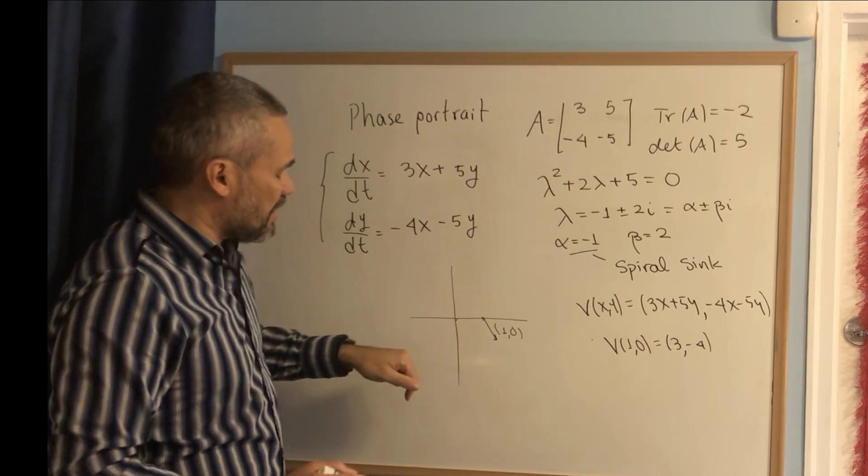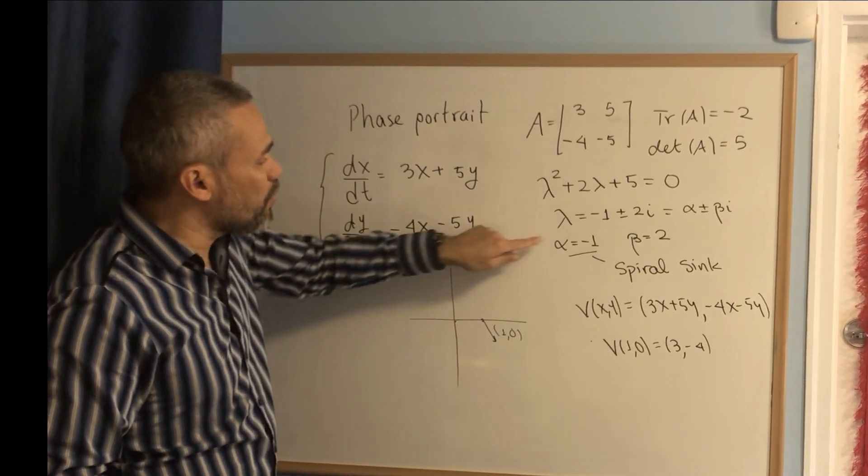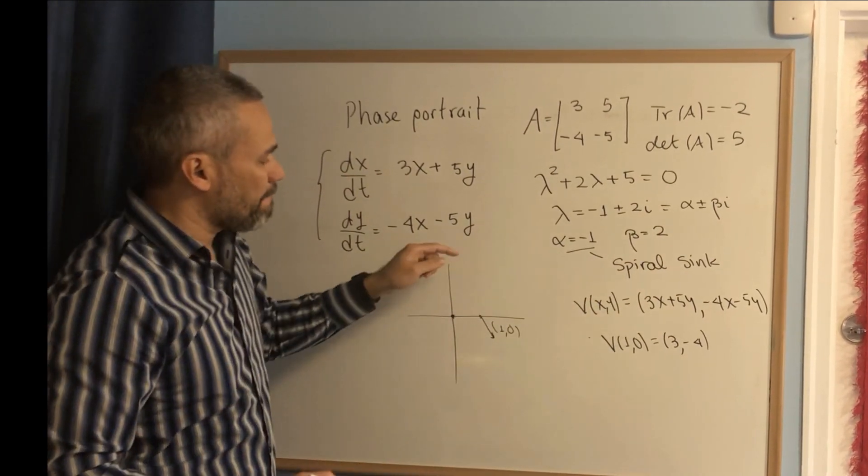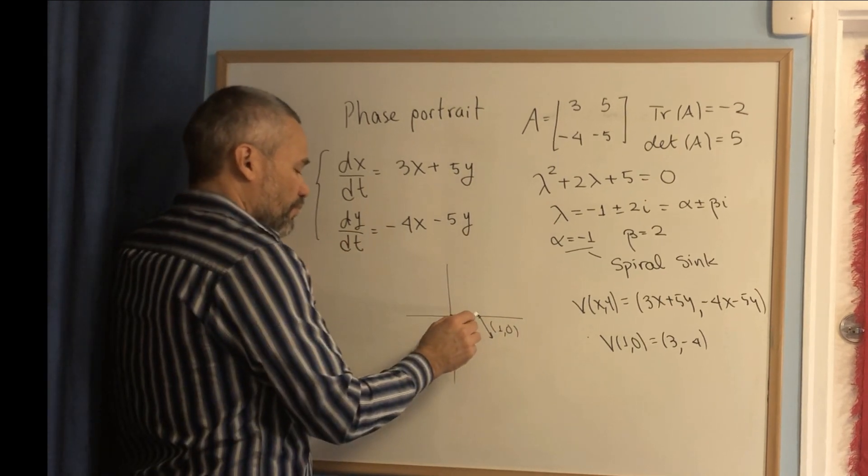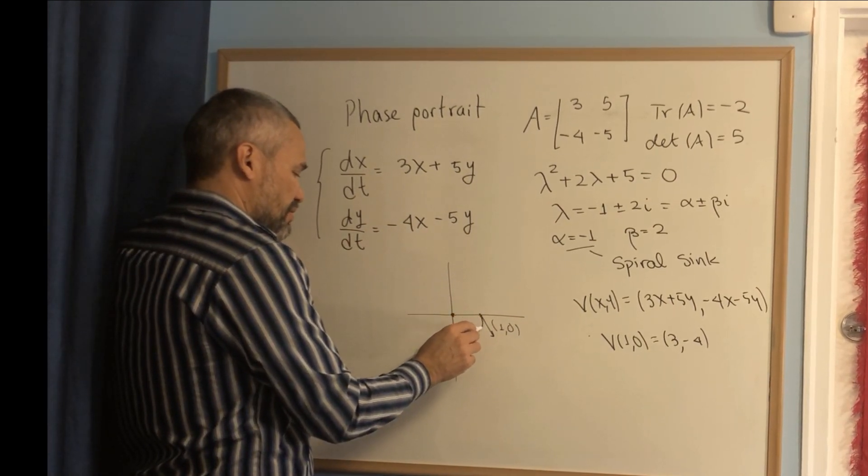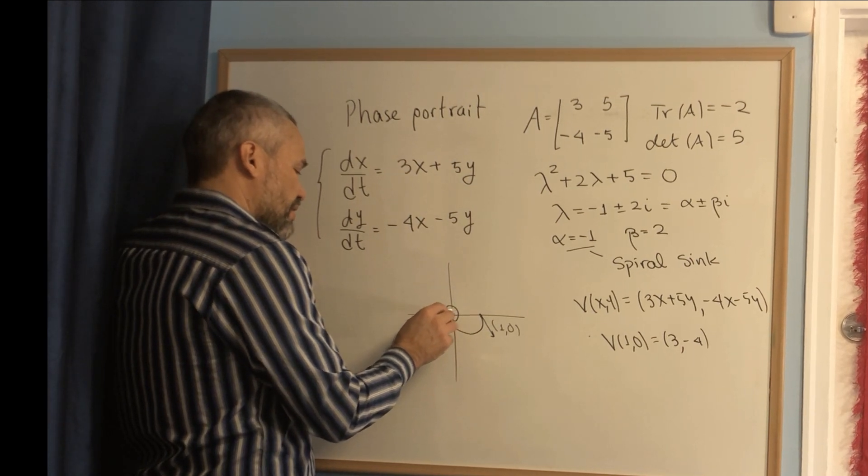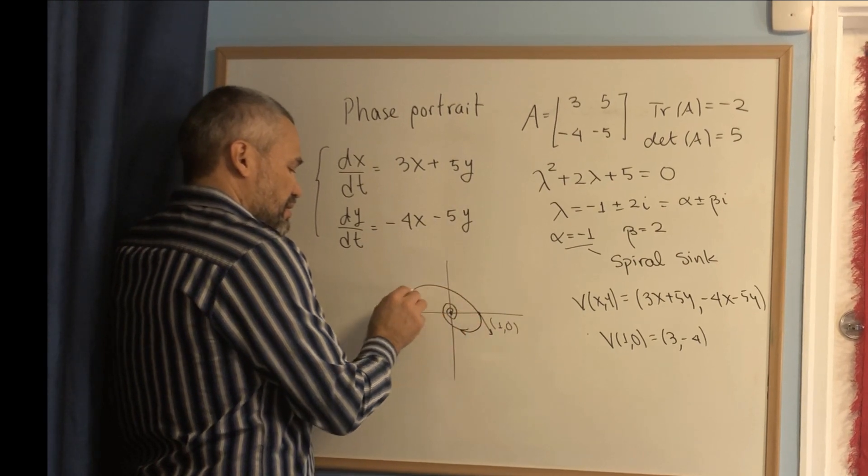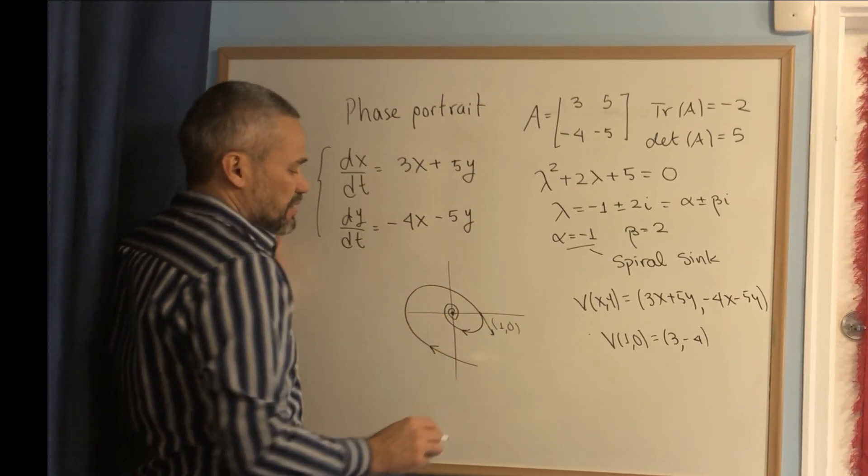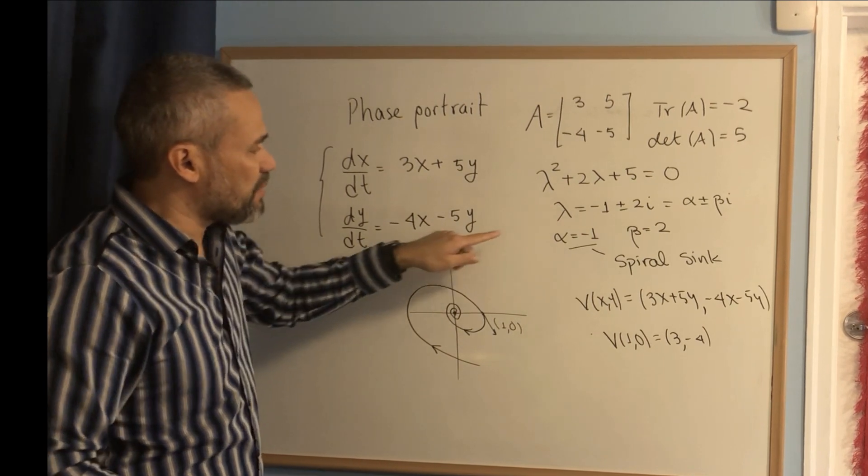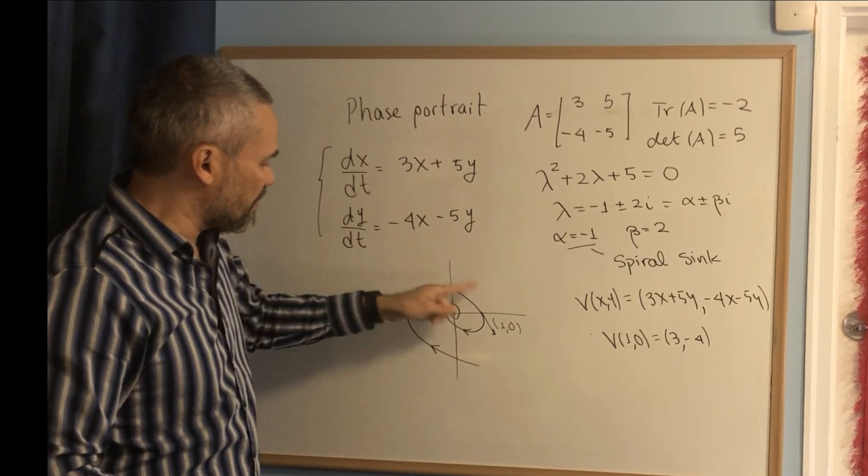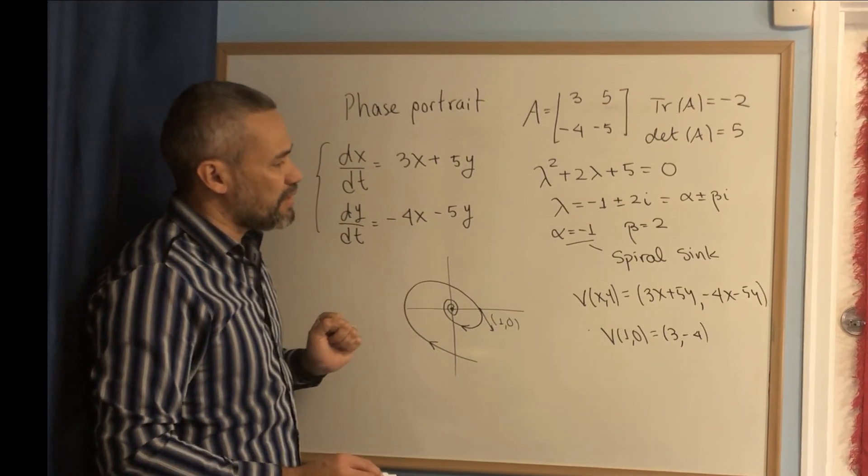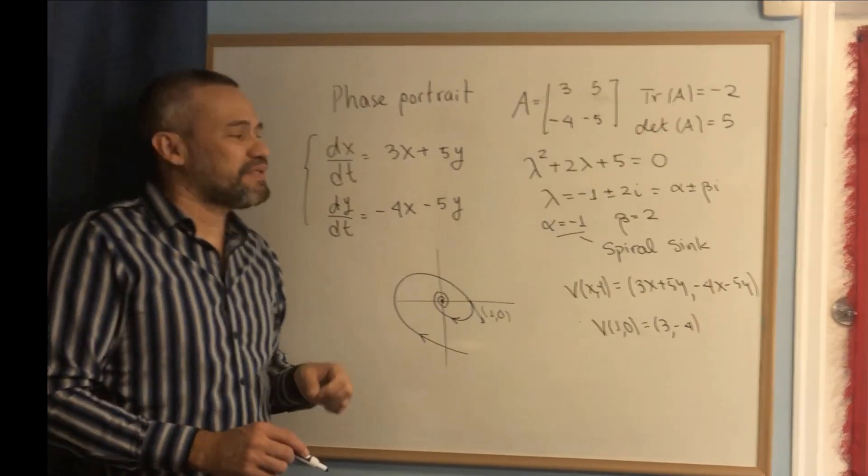That means the spirals are going toward the origin because it's a spiral sink. Remember that this is an orbit on its own. The spiral goes toward the origin and loops infinitely many times. This is a spiral sink, and actually this curve is called a logarithmic spiral. This is a case of a spiral sink.